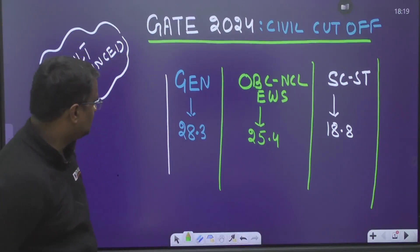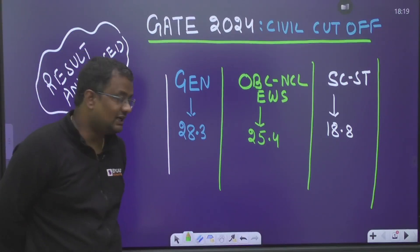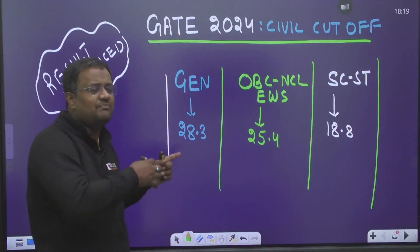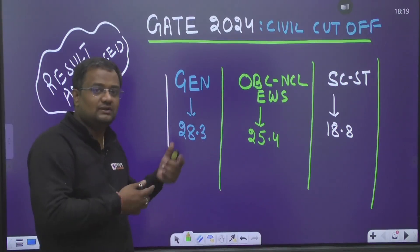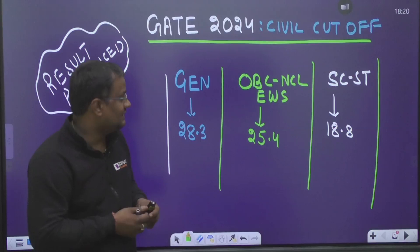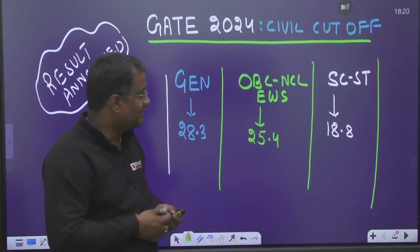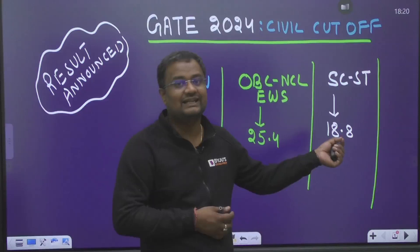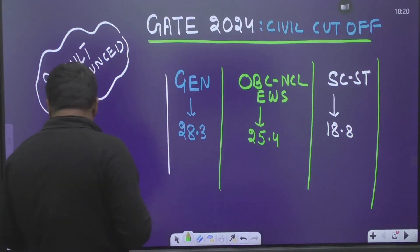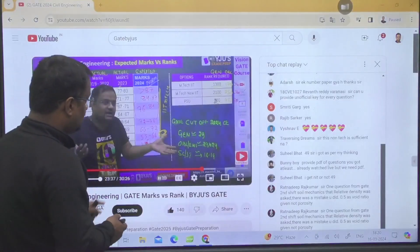Let me tell you about the cutoff. For general category, the cutoff was 28.3, and if you remember on the analysis day and many videos after that, we told the same cutoff. For OBC, it is NCL EWS, it is 25.4 out of 100 marks, and SC-ST it is 18.8 out of 100 marks.